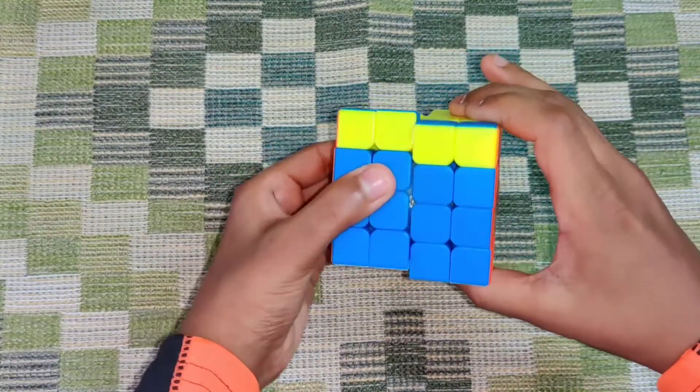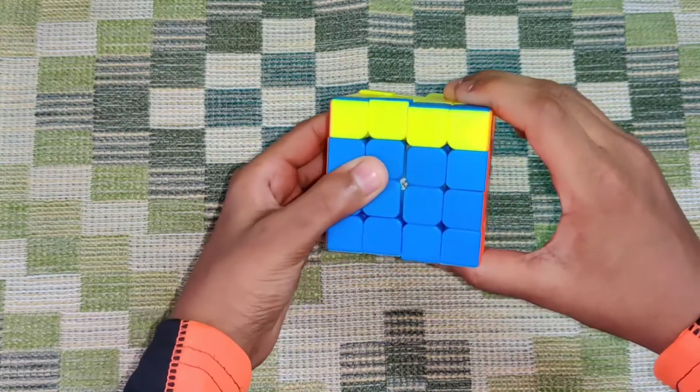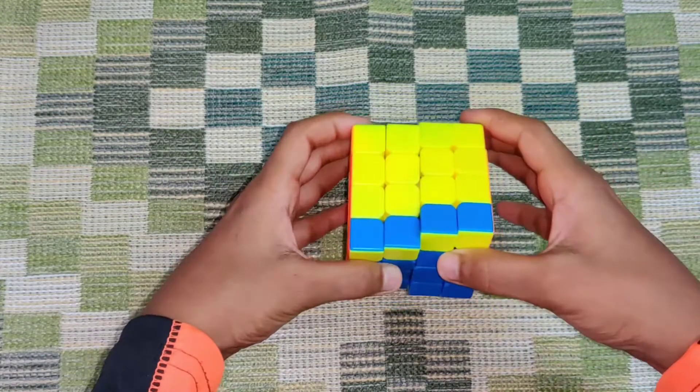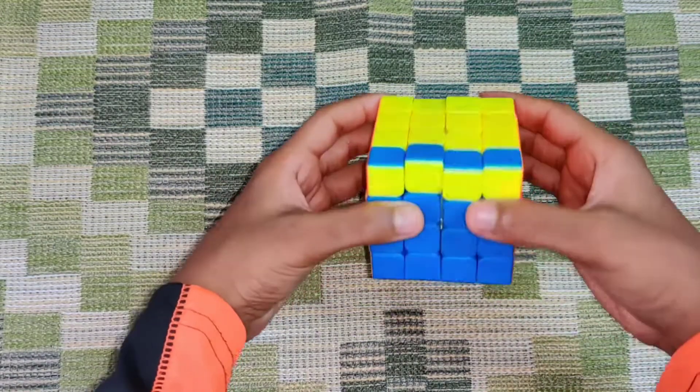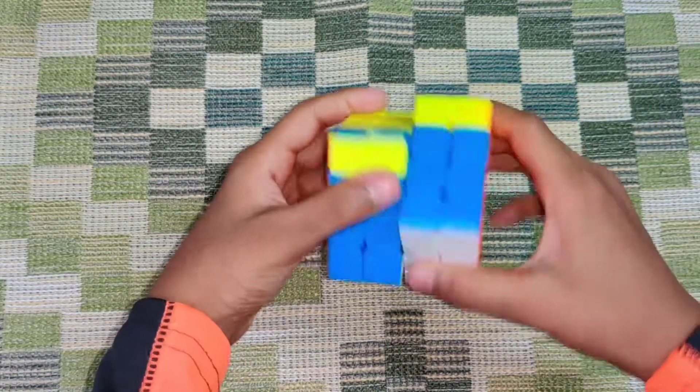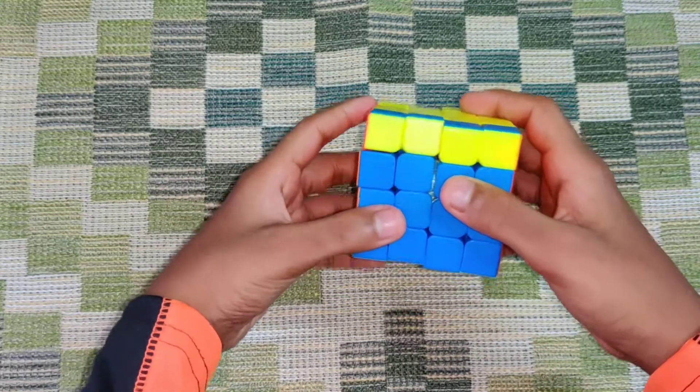So when I say two, I'm saying you move the upper layer two times. When I say up, you're moving the right side up, and down is the right side down. And there is a move with the left side, and I'll tell you guys when that is.